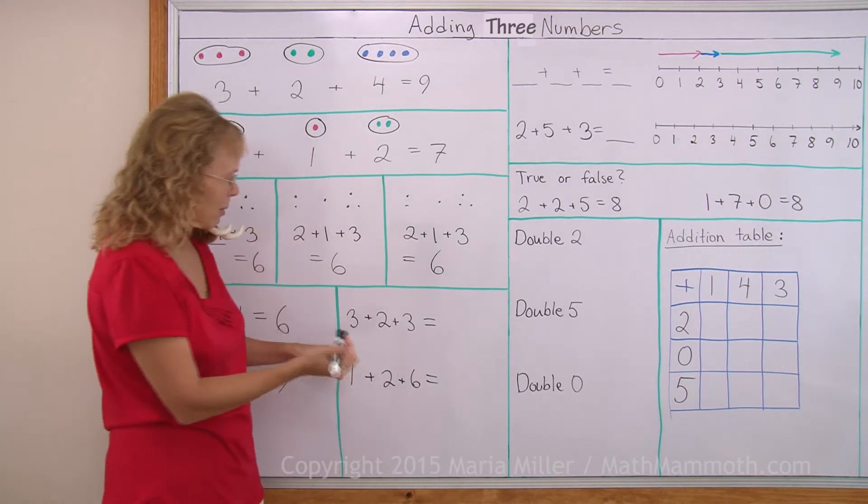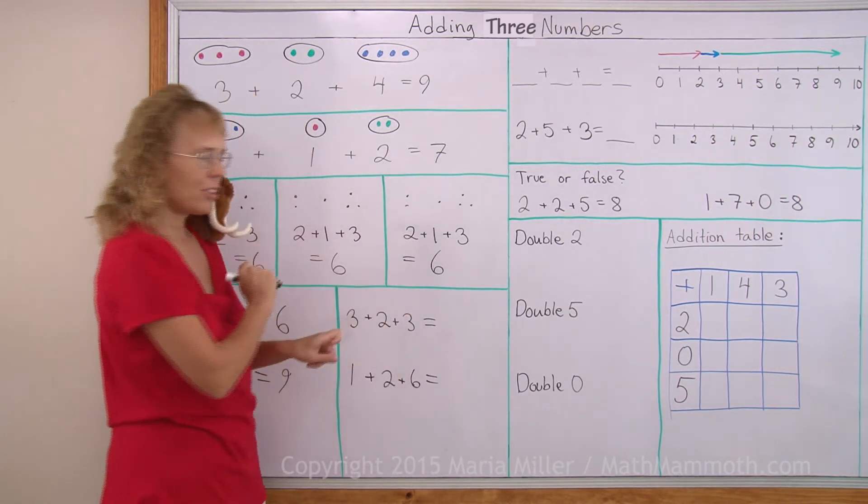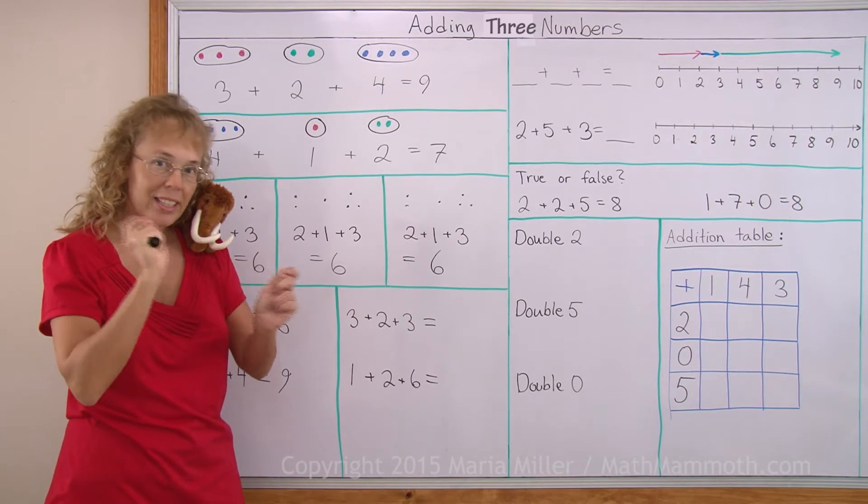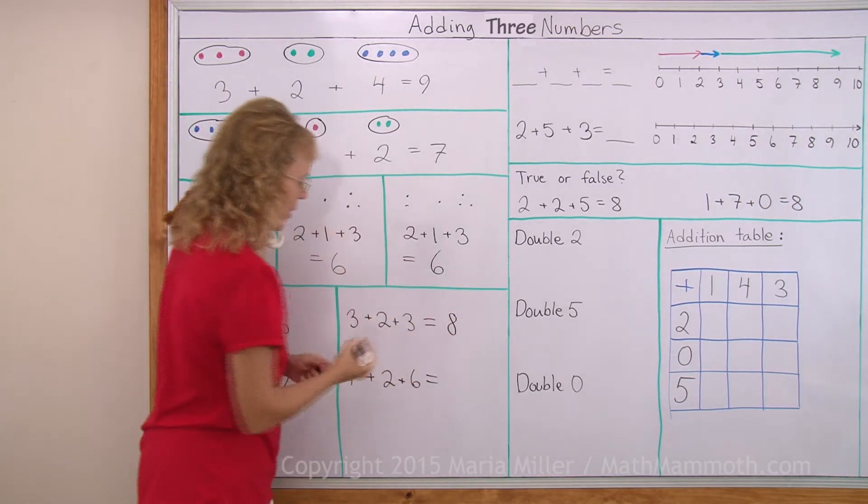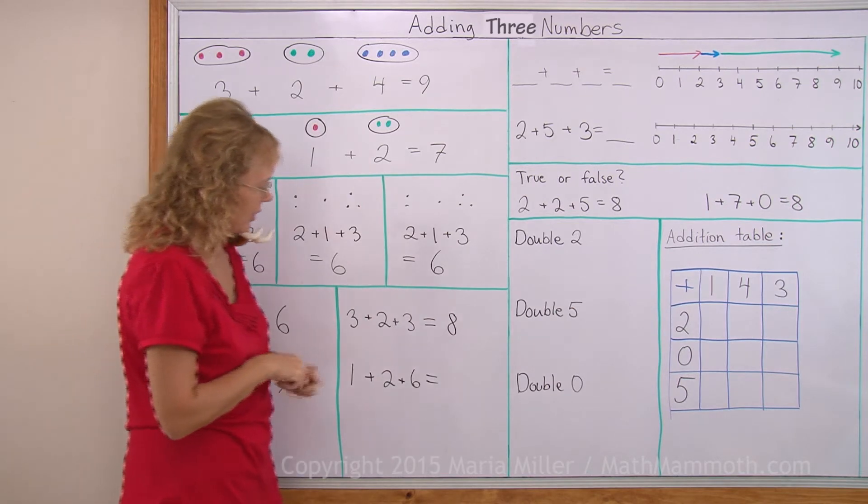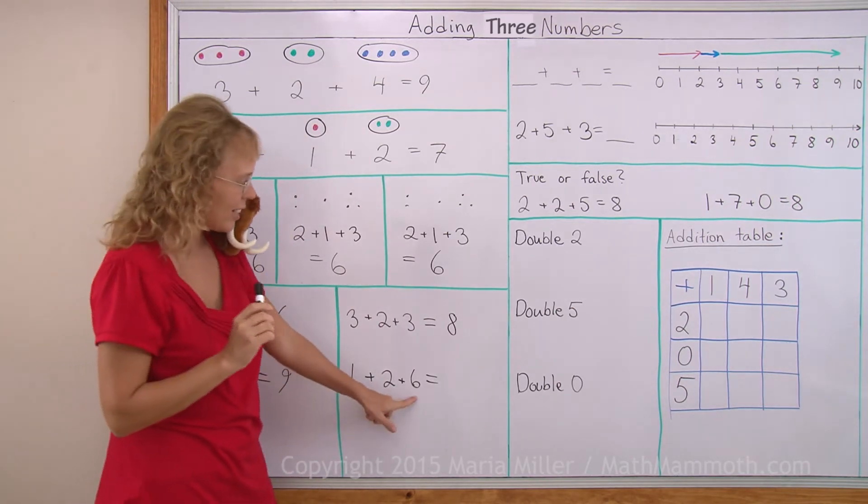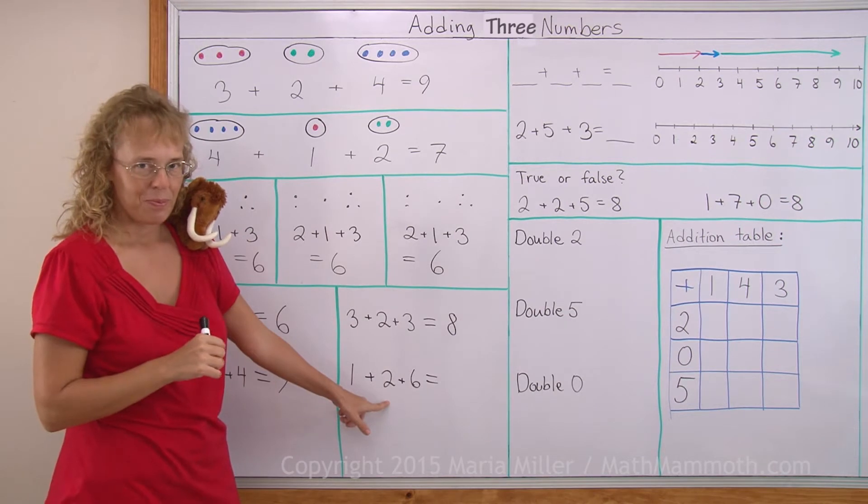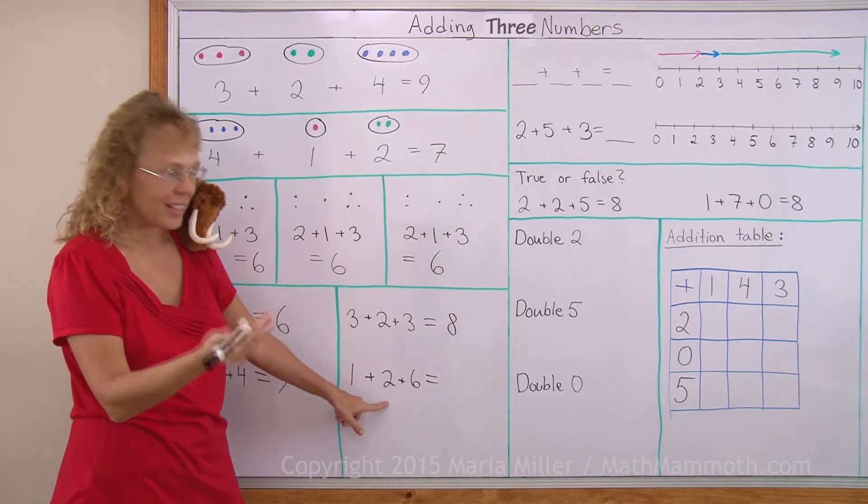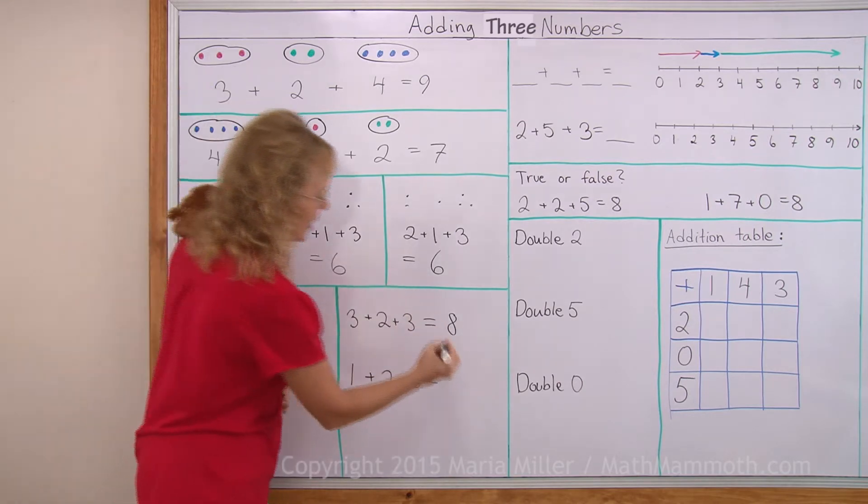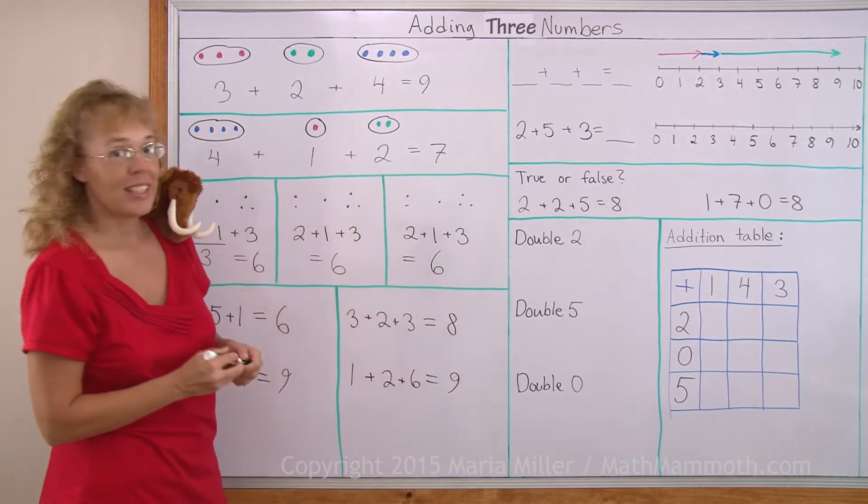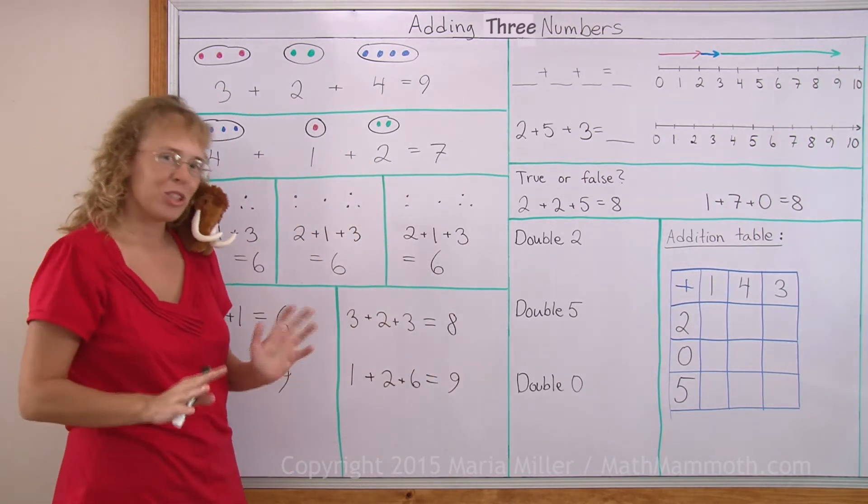Or here, maybe I will add three plus three first. Three plus three makes six, and then the two makes eight. And over here, I'm going to start with my biggest number six and add six plus two. That makes eight. And eight plus one makes nine. You see, that makes it easier when you can choose in which order you add.